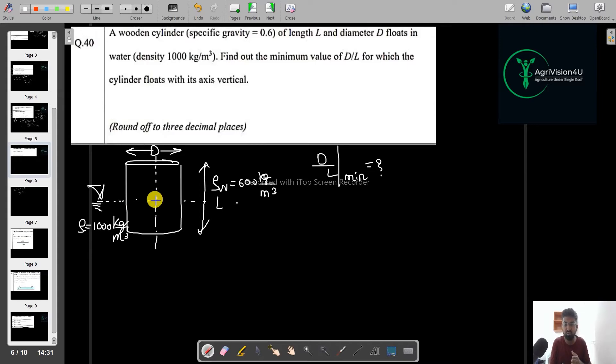Find out the minimum value of D by L, for which the cylinder floats with its axis vertical. So that means this is axis. Since the cylinder is floating here, so directly we can use the concept of the buoyancy force here. First I need to denote it as, since the gravity will lie on the center here, since the geometry is symmetrical, I can write directly as G here. And this is the submerged solid cylinder. Now B point will lie here, the center of buoyancy force.